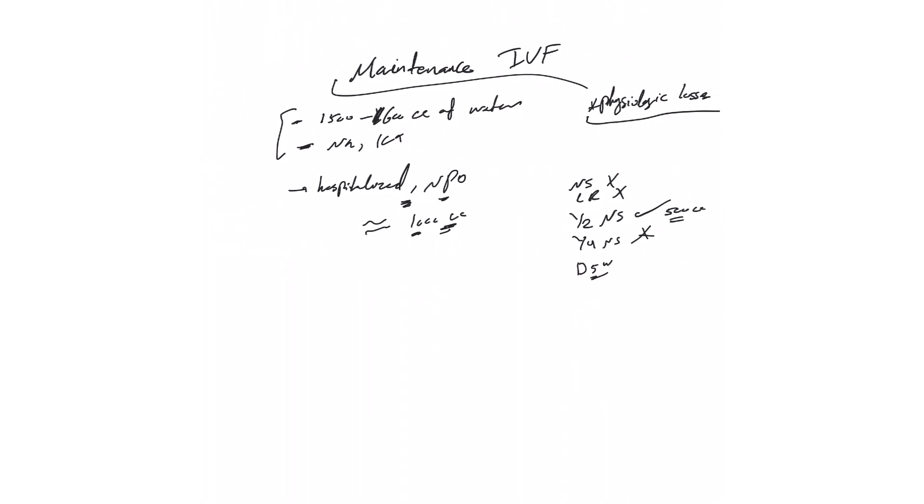D5W by itself we don't advise because it has no electrolytes. So it seems we need a mixture that has free water and electrolytes. The patient is NPO—how about giving him a few calories to prevent catabolism, not to give adequate nutrition but to prevent catabolism?